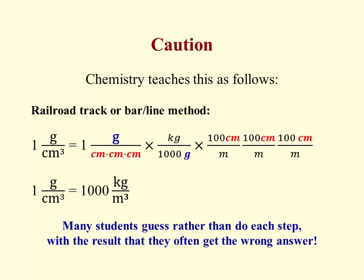Caution. Chemistry teaches this using this thing that people call the railroad track or bar line method, where you just draw a line across the paper and break down each piece. And the thing that a lot of students don't get is that centimeter cubed means centimeter times centimeter times centimeter, the product of those three words. And if you write that out carefully, show all your steps, then you will have three occurrences of 100 centimeters in the numerator, and you'll get the right answer.